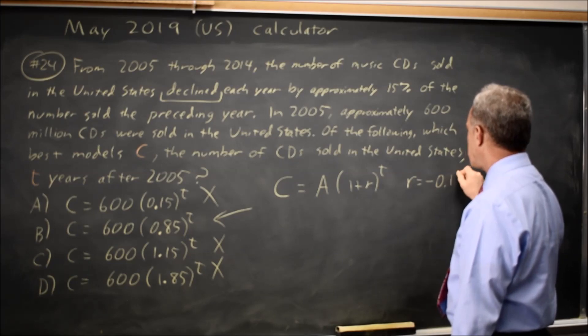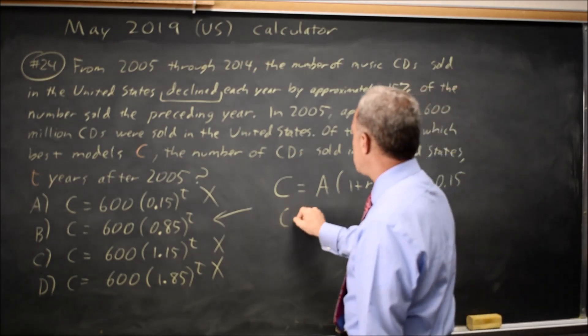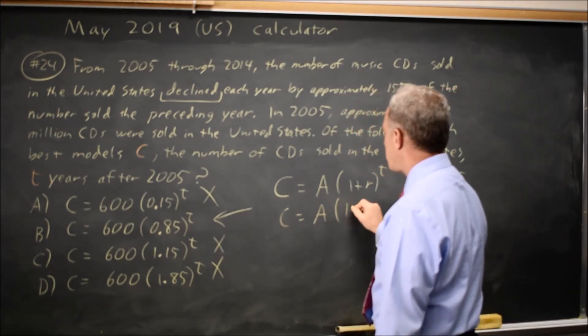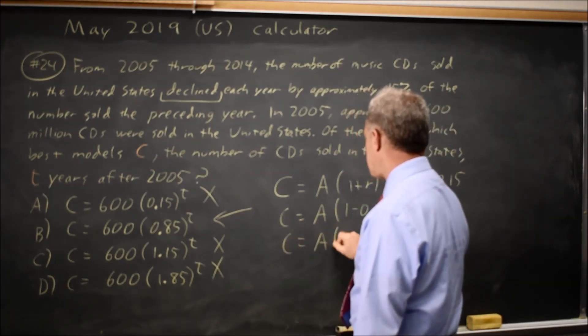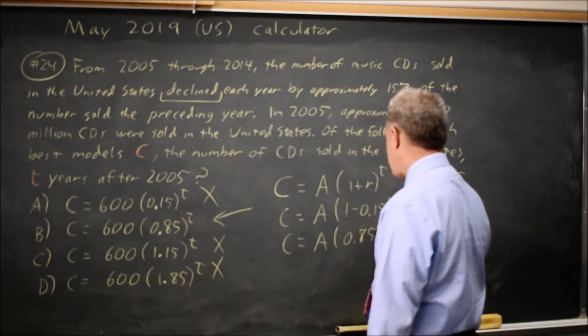And if we're declining by 15%, R equals negative 0.15. So C equals A times one minus 0.15 to the T, or C equals A times 0.85 to the T.